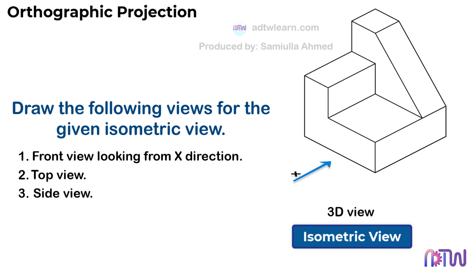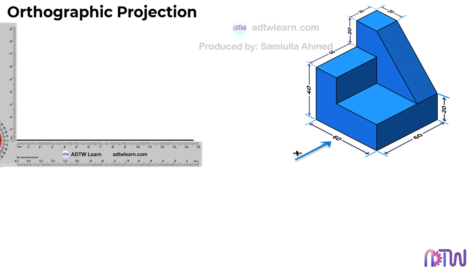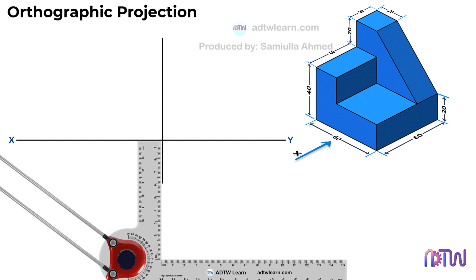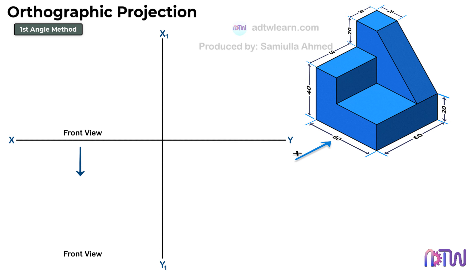Before drawing, we need to draw the reference lines. Since there are no instructions given for whether to draw using the first angle or third angle method, we will draw the orthographic view using the first angle method. In the first angle method, the front view of the object will be above the xy line and the top view will be below the xy line. The left-hand side view of the object will be on the right-hand side.